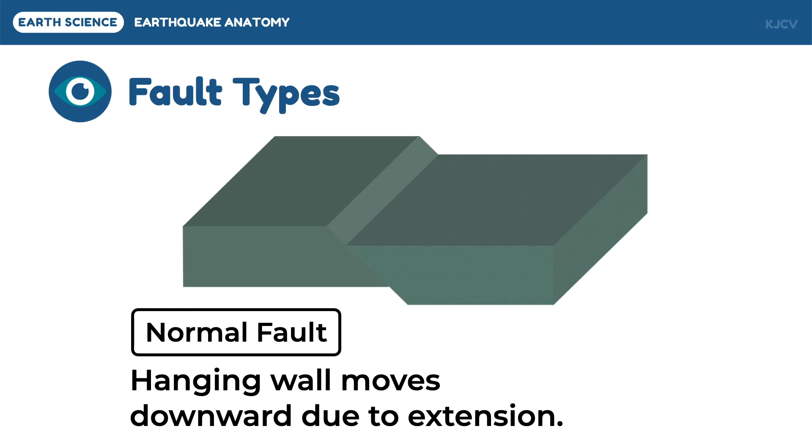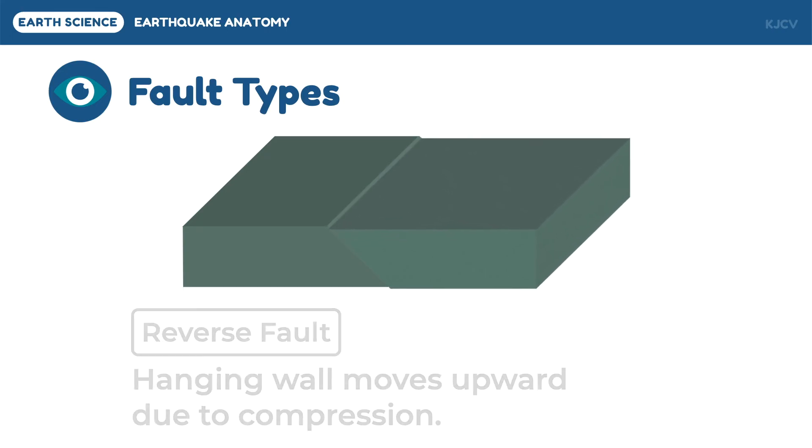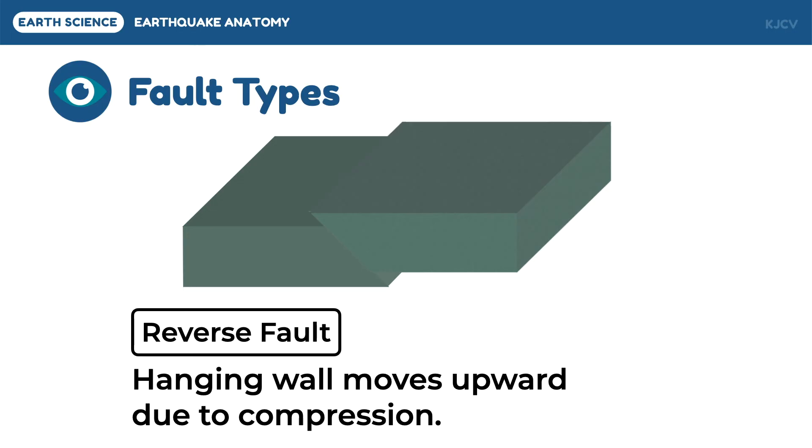If the opposite happens, the fault type is called reverse fault. In this type of fault movement, the hanging wall moves upward due to compression or pushing forces.